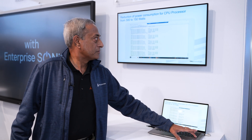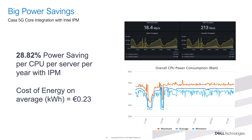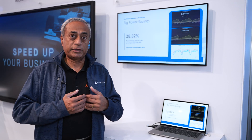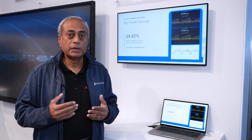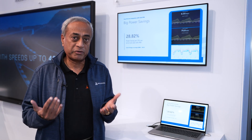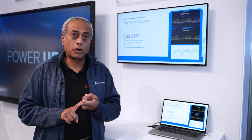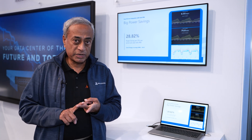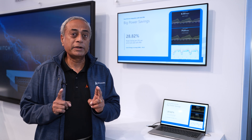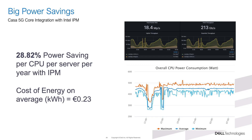Net-net, what we have seen is the power consumption goes down approximately 28.82% for this particular call model per CPU per year. And when you look at a data center with typically hundreds of servers, this leads to significant power savings, a lower cost of ownership, lower operational cost, and most importantly, a lower carbon footprint — leading us to a more sustainable solution.